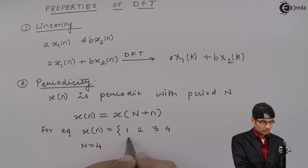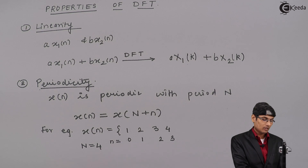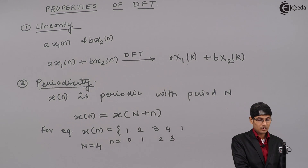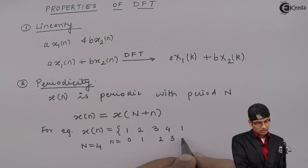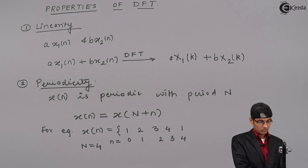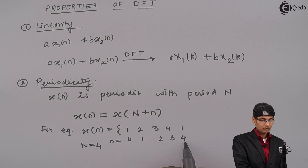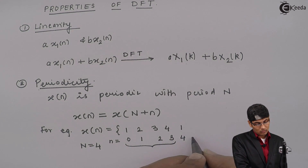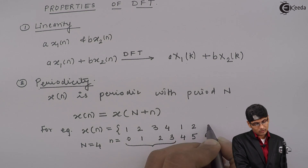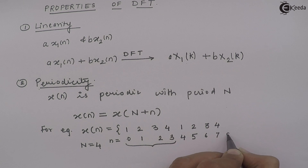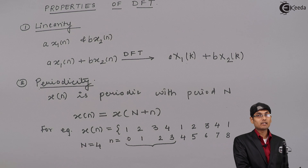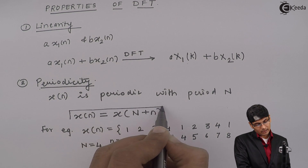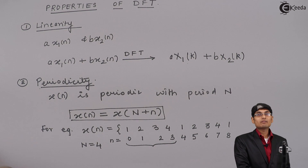What will be the fifth sample? The indices go 0, 1, 2, 3. The fifth sample will be the (N+1)th sample, so it will repeat 1 again. That is, for n=4, if we consider the first sample at index 0, then after the period of 4 samples, the samples repeat themselves. So n=5 gives 2, n=6 gives 3, n=7 gives 4, and n=8 gives 1 again — and this continues in the negative direction of n as well. Mathematically, a periodic signal is written as x(n) = x(n+N).